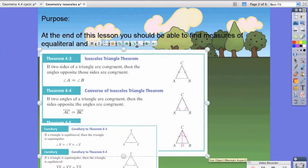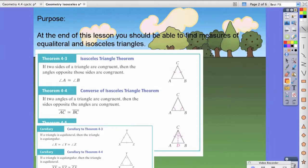essentially just states if two angles are congruent, then their corresponding sides are also congruent. And by corresponding, we mean that if angle A and angle B are the same,